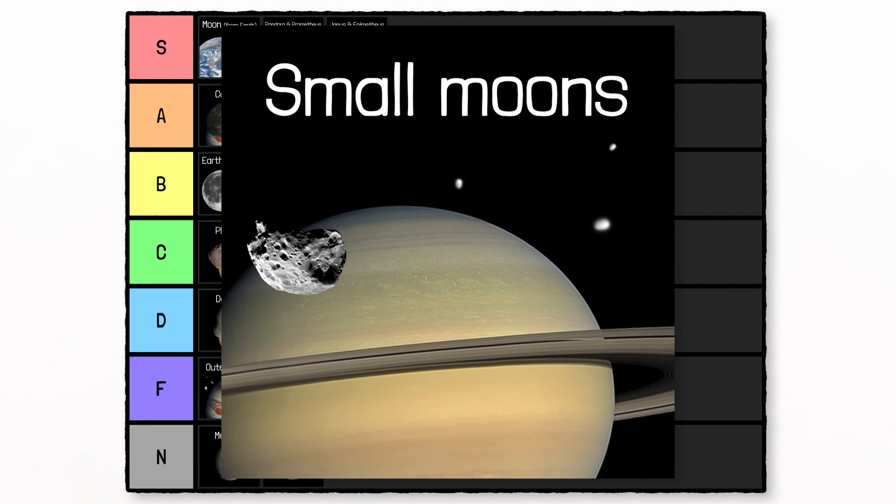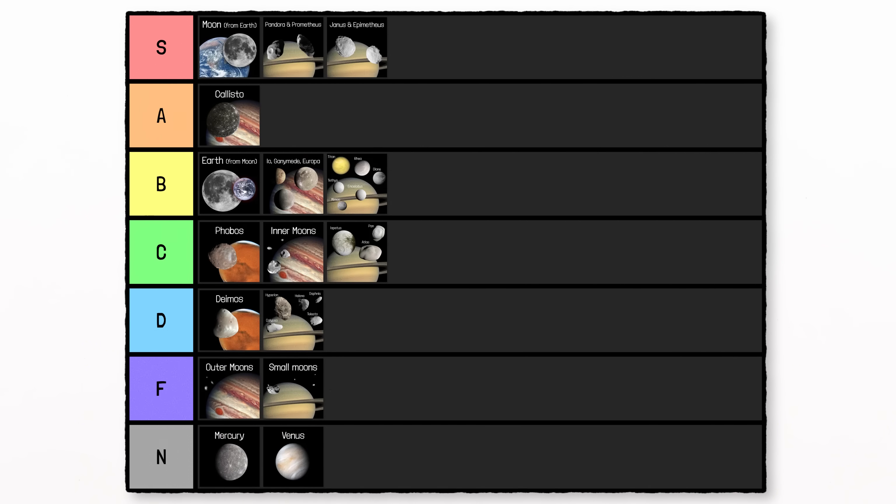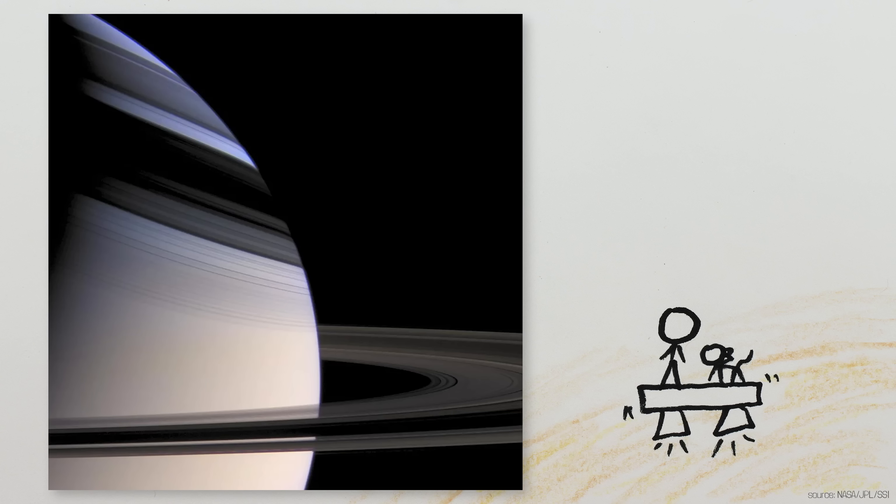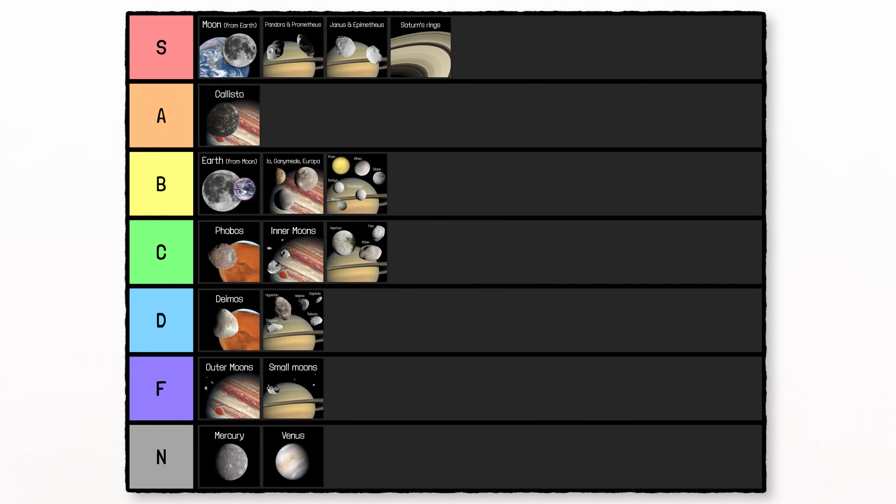The rest of Saturn's moons are too small and far away to see from Saturn with the human eye. F-tier. But Saturn has rings, too. Is it technically an eclipse when Saturn's rings cast a shadow on the planet? I don't know, and I don't care, it looks spectacular. S-tier.